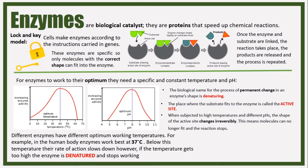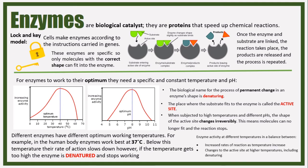Different enzymes have different optimum working temperatures. For example, the enzymes in our body work best at 37 degrees Celsius. Below this temperature, the rate of action slows down; however, if the temperature is too high, the enzyme is denatured and stops working. Enzyme activity at different temperatures is a balance between increased rates of reaction as temperature increases and changes to the active site at higher temperatures, including denaturing.